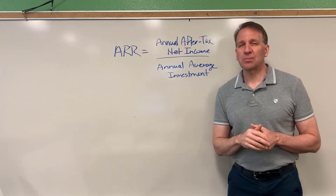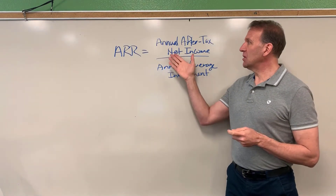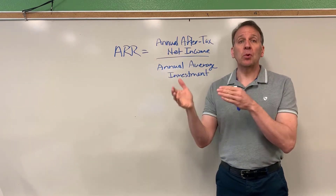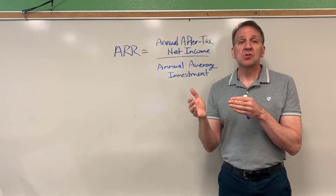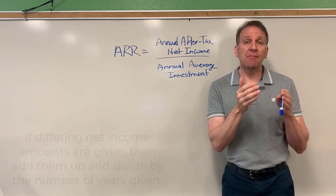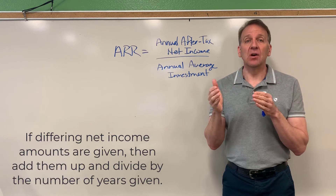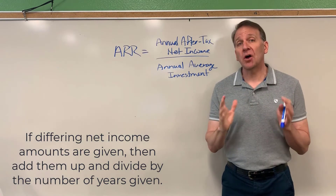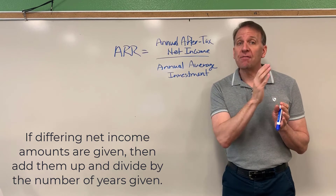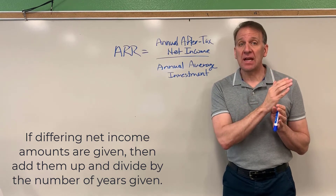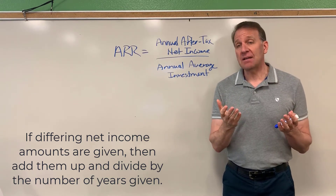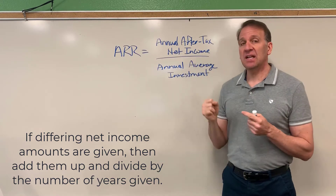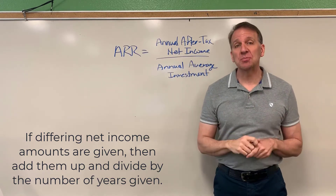Another thing textbooks often do is give you after-tax net income for multiple years. If they give you net income for five years and each year it changes, all you need to do is add up all five years and divide by five. That gives you your annual after-tax net income on an average basis.